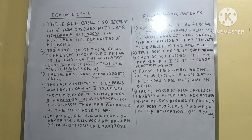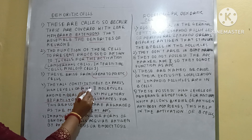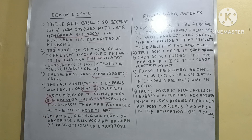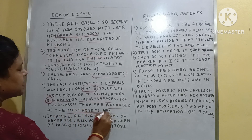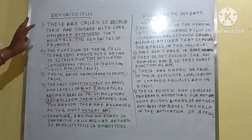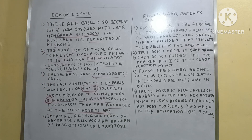For this reason, they are regarded as the most potent APCs. They express high levels of MHC 2 molecules and are members of the B7 family. That is why these dendritic cells are the most potent APCs among the different types of antigen presenting cells.